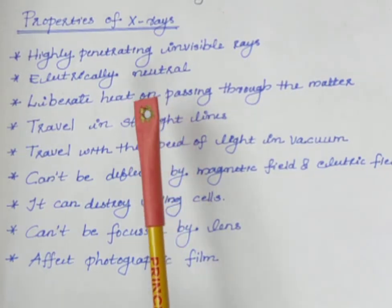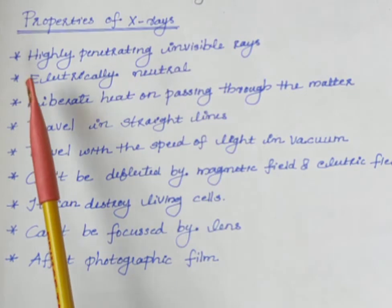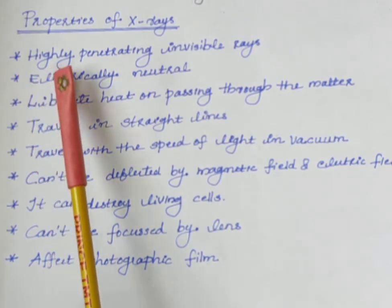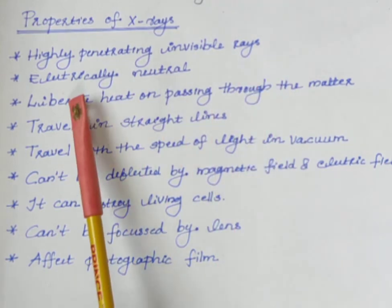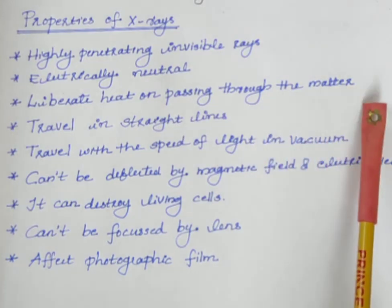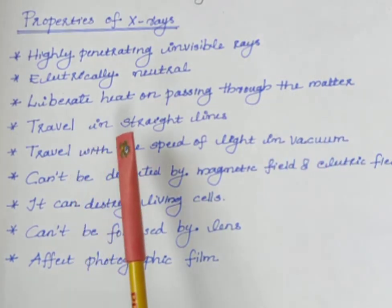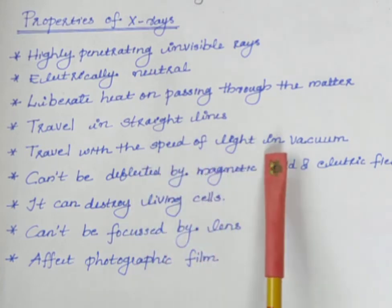Next, we will discuss some of the important properties of X-rays. X-rays are highly penetrating invisible rays, electrically neutral, liberate heat on passing through matter, travel in straight lines, and travel with the speed of light in vacuum.